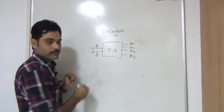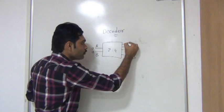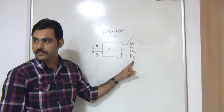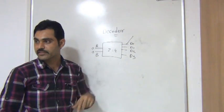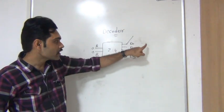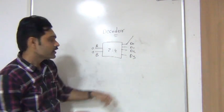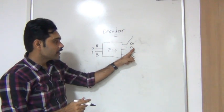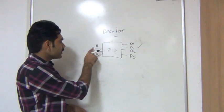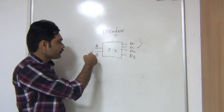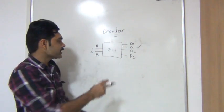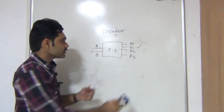With 2 inputs, you can apply 00 first. If you apply 00, only the D0 output line will be activated. That means, out of the 4 output lines, through which line you want to get your output is decided by the input you are applying. If you apply 00, you will get output from D0 - D0 will be 1 and all remaining will be 0. If you apply 01, D1 will be activated and D0, D2, D3 will be deactivated. Similarly, if you apply 10, D2 will be activated. If you apply 11, D3 will be activated. This is the simple concept of the decoder.